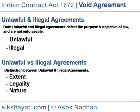Unlawful vs. Illegal Agreements — Distinction based on Extent. An unlawful agreement is void ab initio and it affects only the immediate parties and has no effect on collateral transactions.